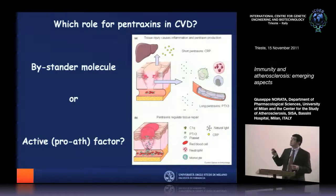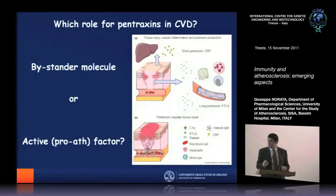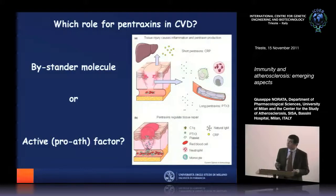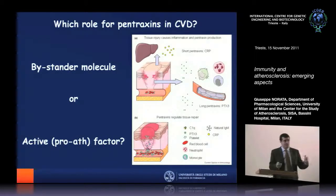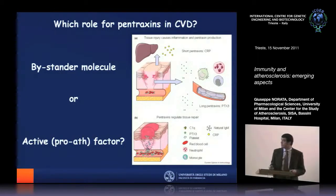Then you have long pentraxins, such as PTX-3, which is directly produced at the tissue level by endothelial cells, monocytes, and granulocytes. The key point under discussion for at least 10 years is whether pentraxins are only bystanders — good biomarkers but not doing too much — or whether they are pro-atherogenic factors increased because they sustain the atherosclerotic response within the vascular wall.